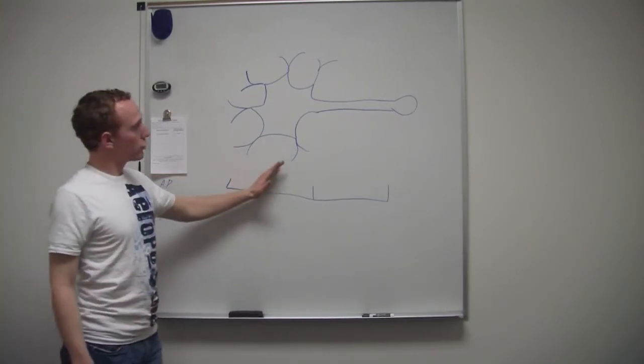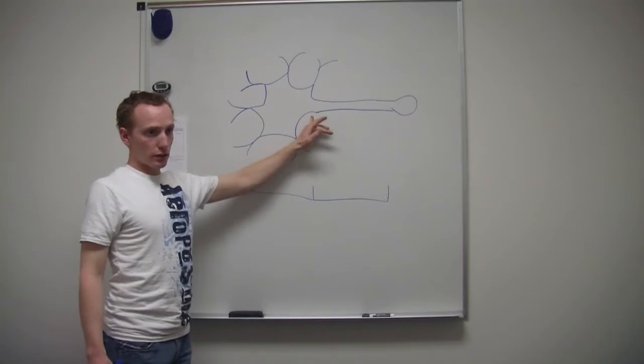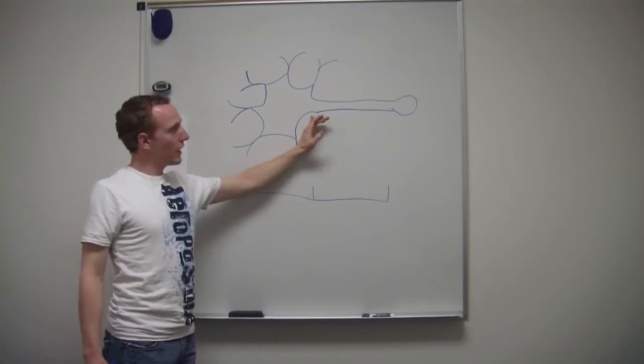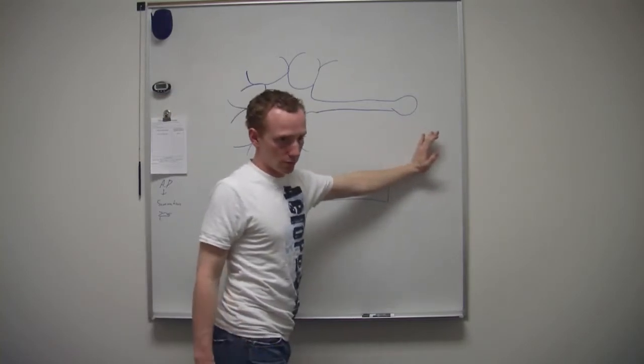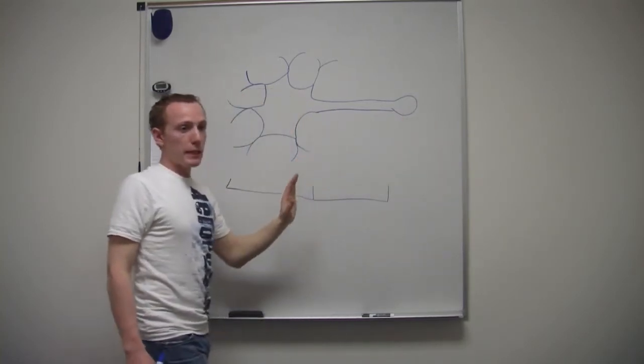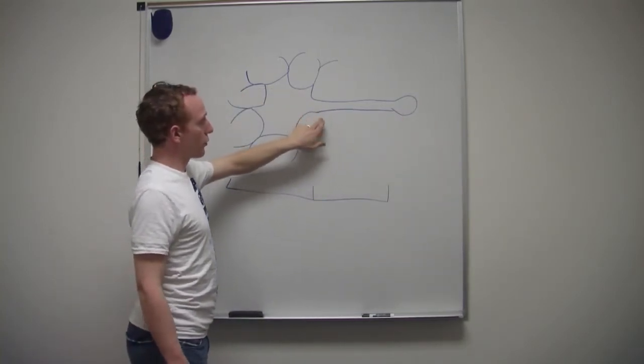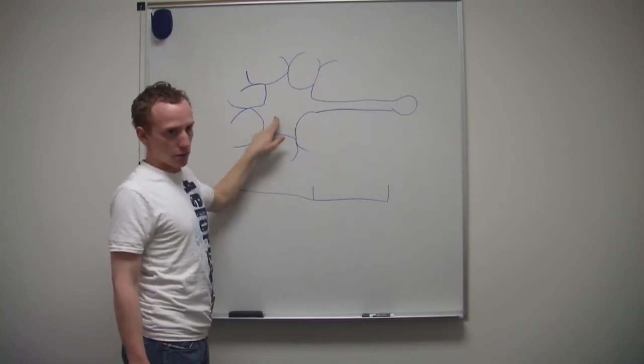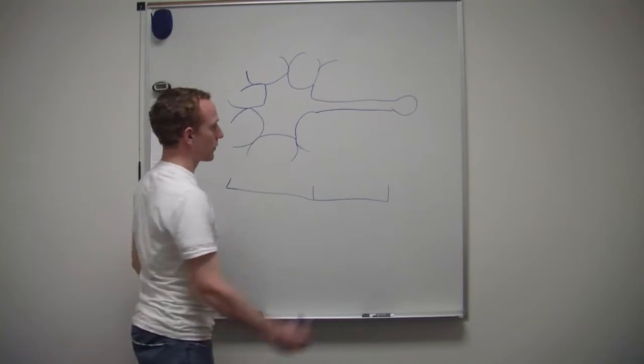In the dendrites, so all the way until the axon hillock, that's where graded potentials happen. Action potentials happen after that. Meaning there is a threshold here, but there is not a threshold here.